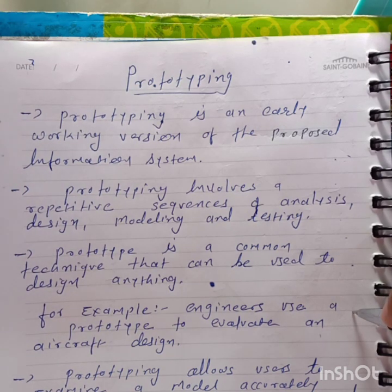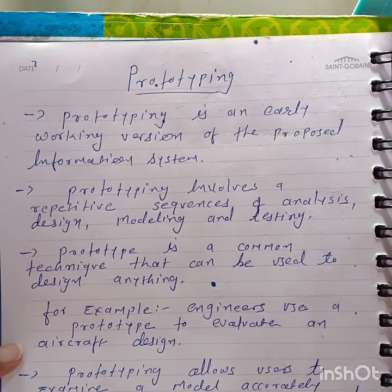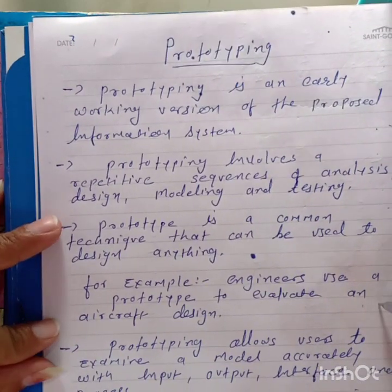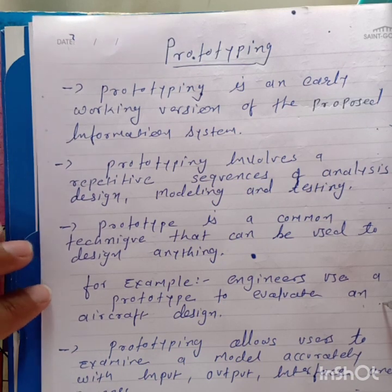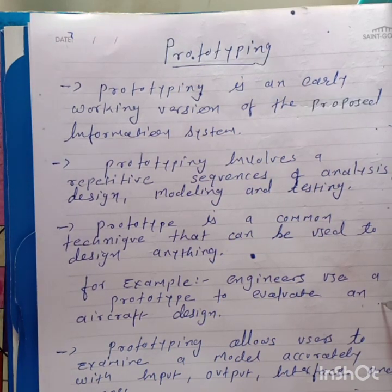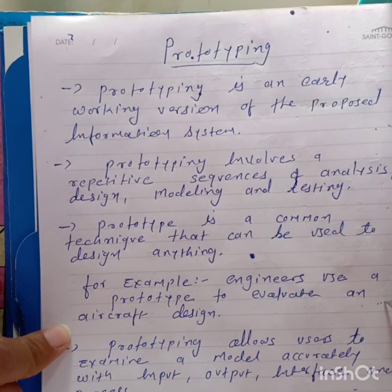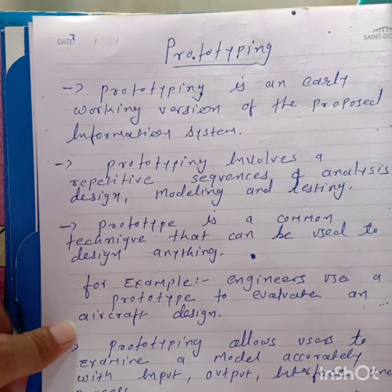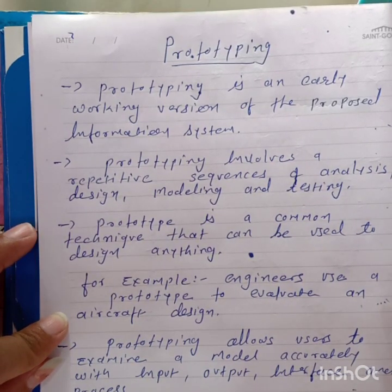The engineer creates an aircraft prototype and tests that aircraft in a controlled environment. If everything is okay, then only the aircraft production will be done. So prototyping is used as a sample — it is an early working version of anything, including an information system.